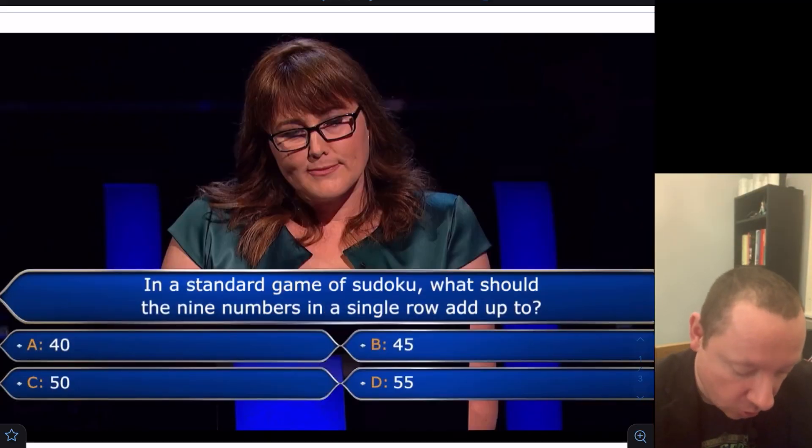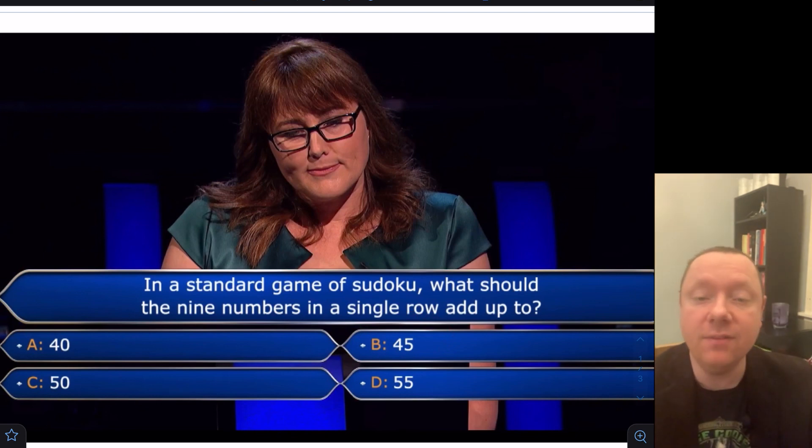So it says in a standard game of Sudoku, what should the nine numbers in a single row add up to? 40, 45, 50, or 55. The answer was of course 45 if you watched the clip. Why is it 45?